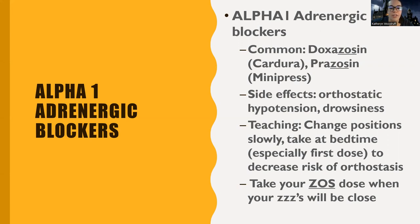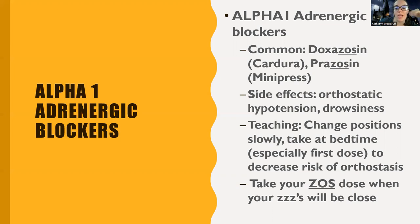Alpha blockers all end in 'zosin.' Like the others, they all cause orthostatic hypotension. They can also lead to drowsiness. The thing that's different about this class is we usually want patients to take it at bedtime — especially the first dose — to decrease the risk of orthostasis. A mnemonic: take your 'zosin' dose when your Z's will be close. Taking it near bedtime means less orthostasis since you'll be lying down.